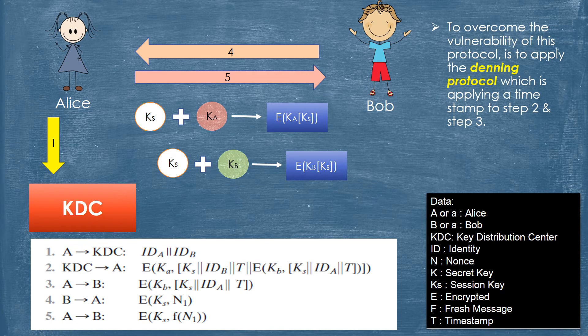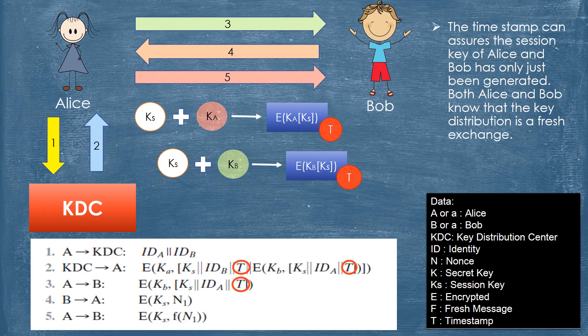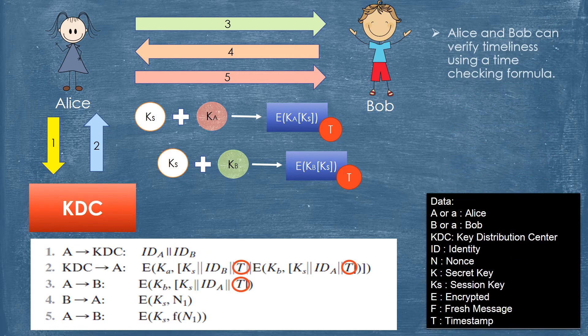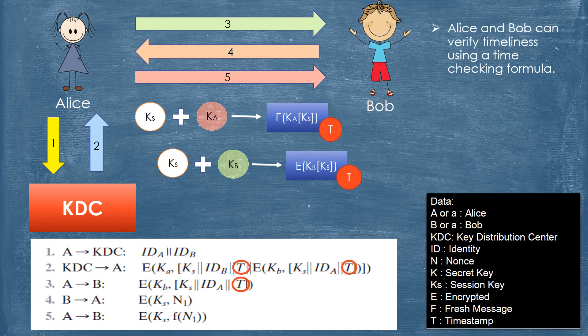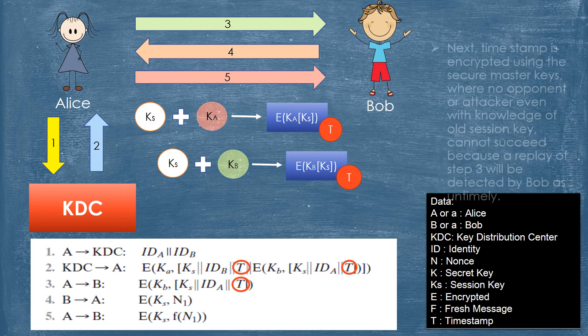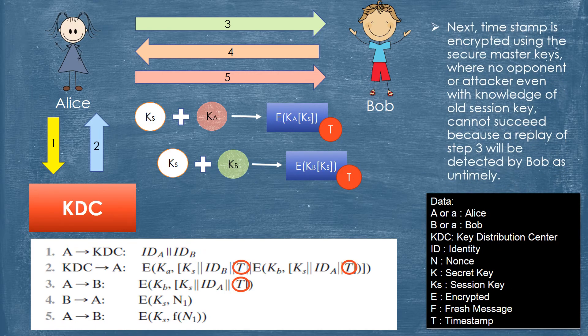Explanation of Needham-Schroeder using KDC with timestamp. To overcome the vulnerability of this protocol, apply the Denning protocol, which applies a timestamp to step 2 and step 3. The timestamp can assure that the session key of Alice and Bob has only just been generated. Both Alice and Bob know that the key distribution is a fresh exchange, and they can verify timeliness using a time-checking formula.